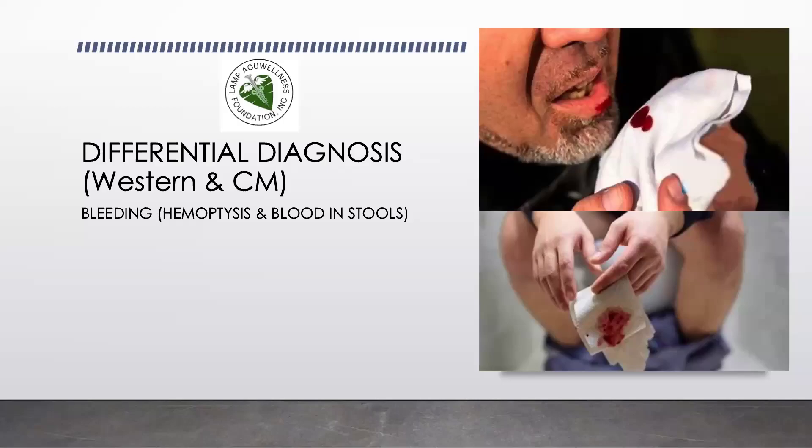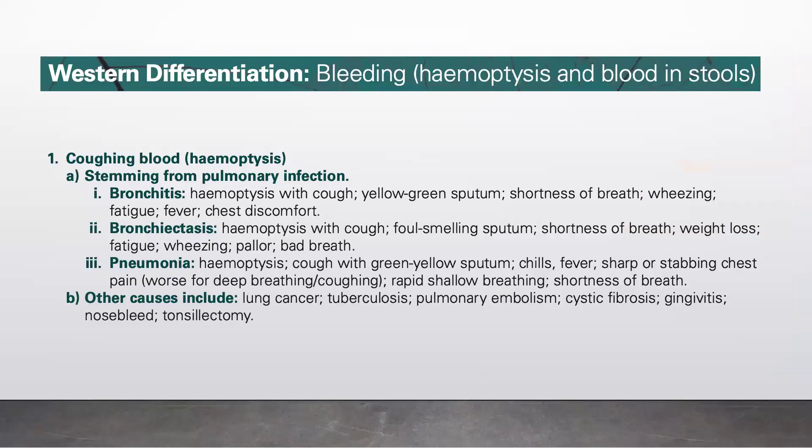Let's now proceed to differential diagnosis in Western and Chinese medicine and discuss two conditions specifically: hemoptysis and blood in stool. We'll start with the Western differentiation of bleeding in hemoptysis and blood in the stools.